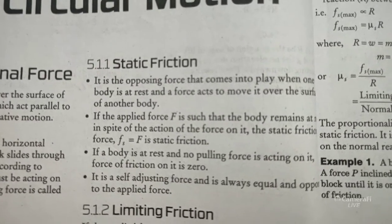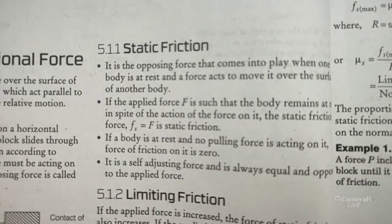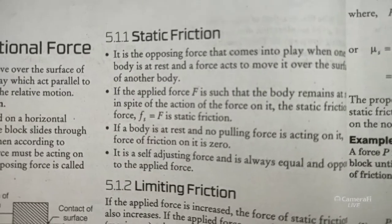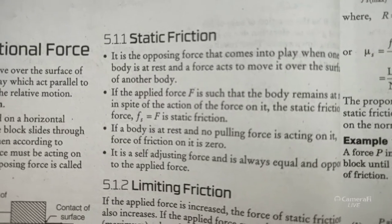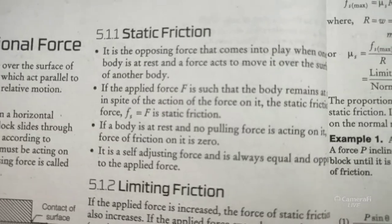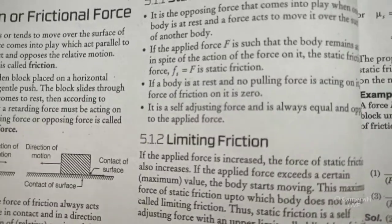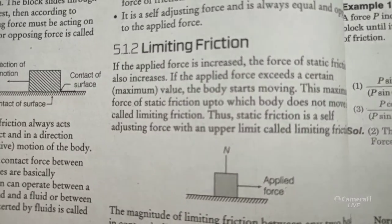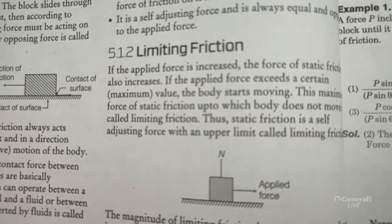Static friction: if a body is at rest and no pulling force is acting on it, the force of friction is zero. It is a self-adjusting force — equal and opposite to the applied force. So it adjusts itself as applied force increases, up to a maximum called limiting friction.